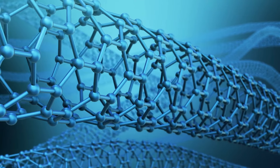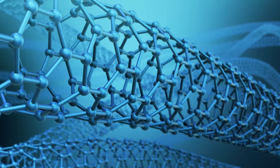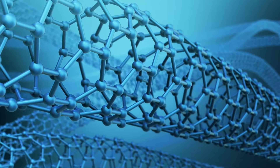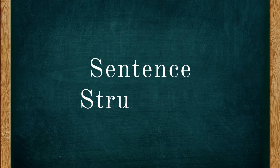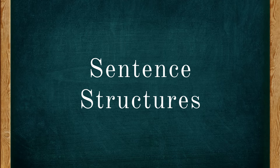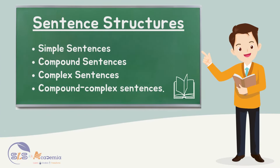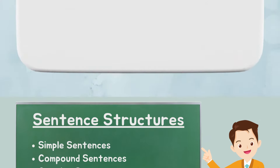Every well-built structure has a solid foundation and sentences are no exception. Sentence structures, also known as syntactic structures, determine how words and phrases are organized within a sentence. In the English language, understanding the various sentence structures is essential for effective communication. There are four primary sentence structures: simple, compound, complex, and compound-complex sentences. Let us understand each of these structures in detail starting with the simple sentence structure.